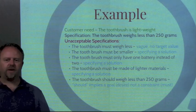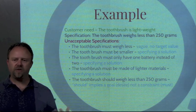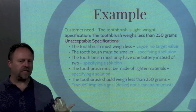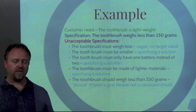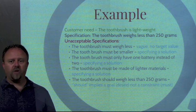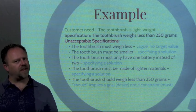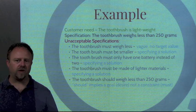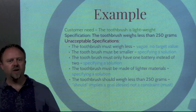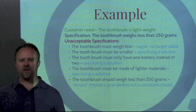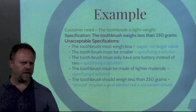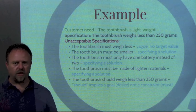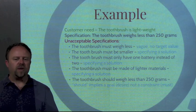Let's talk about some unacceptable ways to write specs. If we said the toothbrush must weigh less — that's ambiguous because there's no target value. We could say the toothbrush must be smaller, but that implies a specific way to reduce weight — it's implying a solution. Similarly, the toothbrush must have only one battery instead of two, or the toothbrush must be made of lighter materials — these also specify solutions. Those are all possible design concepts, but we don't want to write our spec that way. We want the spec to keep all of those as possible designs.